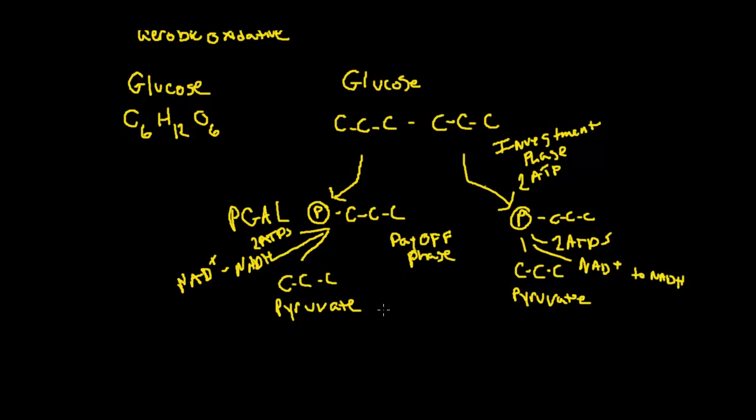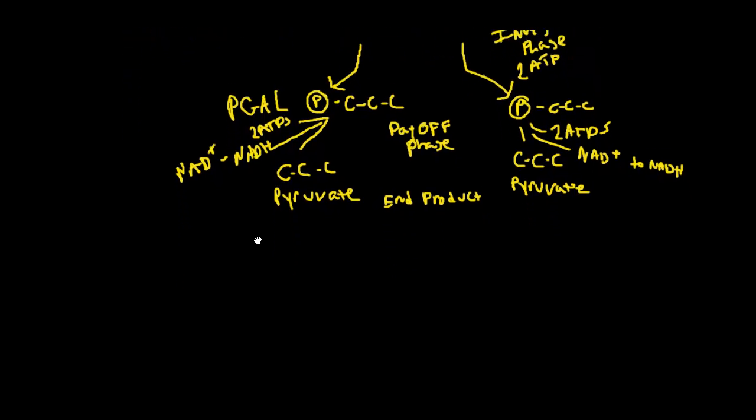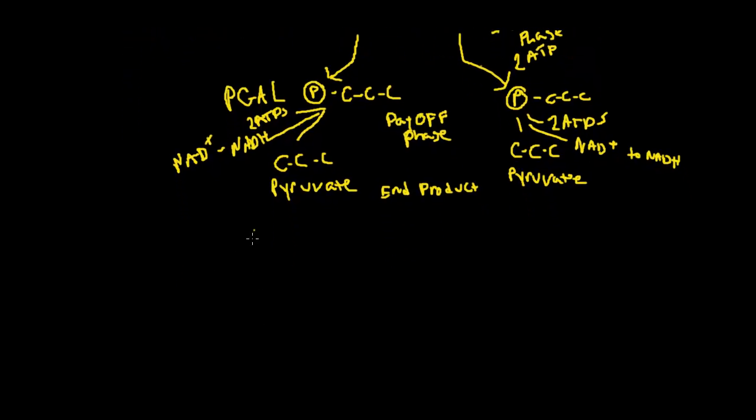So this is really the end product of glycolysis. We can use this pyruvate in cellular respiration if oxygen is present. We'll talk about that a little bit later. But let's look at what we would get out of glucose and how it's really used as an energy system. After this is all said and done, we're going to net two ATP.